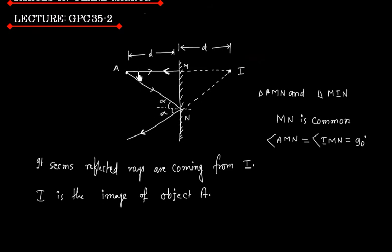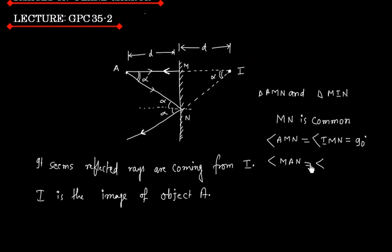If this angle is alpha, this angle is also alpha, because these two angles are alternate angles. Now if this angle is alpha, this angle is also alpha, because these two are corresponding angles. So angle MIN is the same as angle MAN. So we can say these two triangles are congruent.